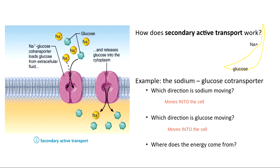Facilitated diffusion means no energy required — things go from where there's a lot to where there's a little. We have a lot of glucose inside the cell and not much outside. If I used no energy and transported stuff down its concentration gradient, glucose would go from inside where there's a lot to outside where there's not as many.